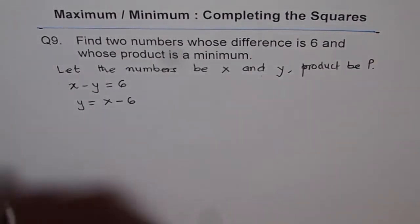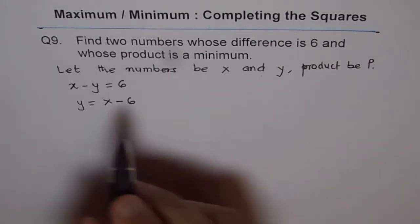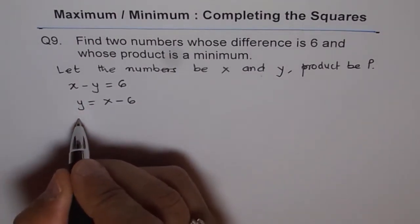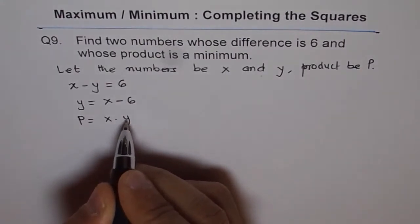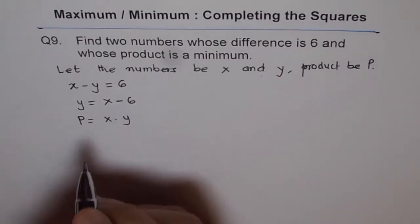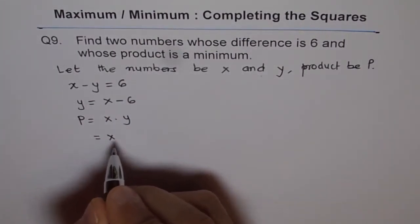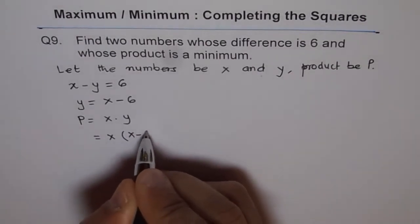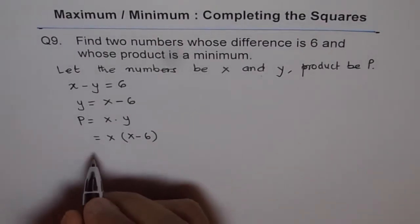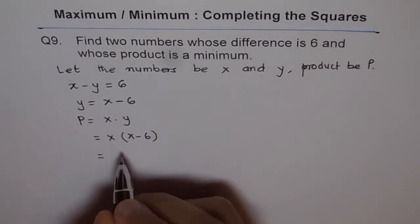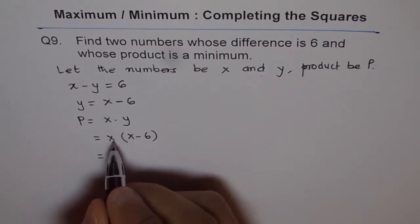Now the product is the product of x and y, so we have product equals x times y. We can write y in terms of the variable x, so we get x times (x minus six) as the product of these two numbers. Let's expand it and see the quadratic equation in standard form.